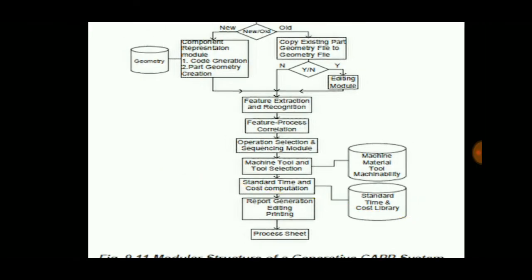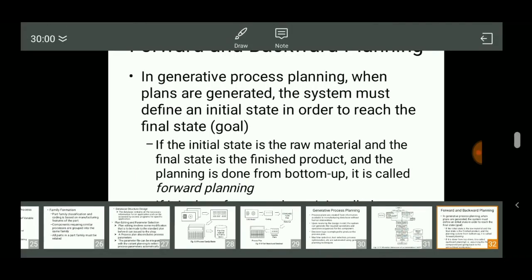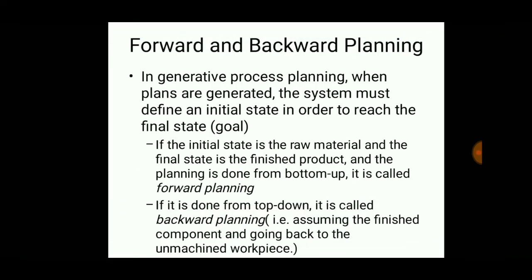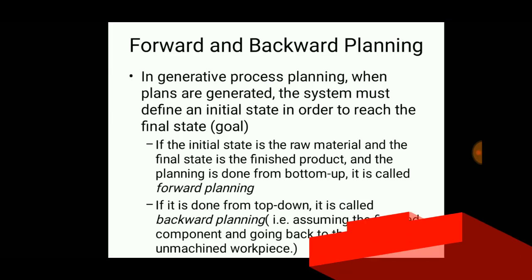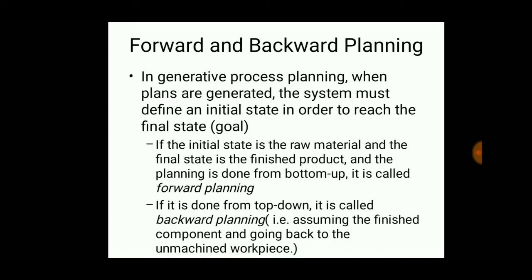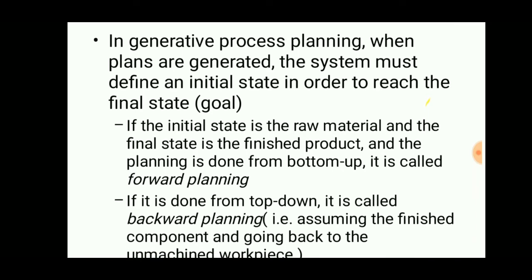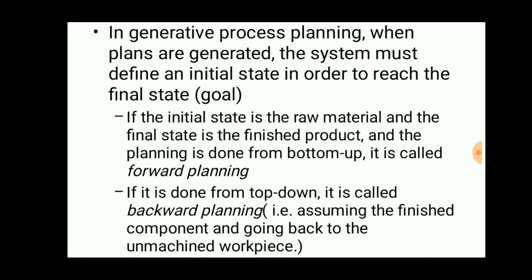In forward and backward planning in generative process planning: when plans are generated, the system must define an initial state in order to reach the final stage. If the initial stage is the raw material and the final stage is the finished product, planning done from bottom up is called forward planning, and planning done from top down is called backward planning.